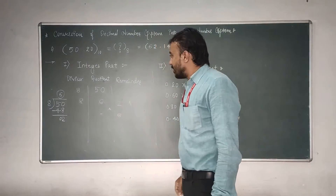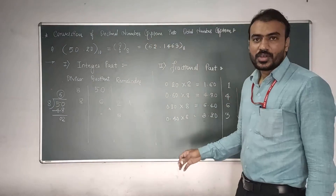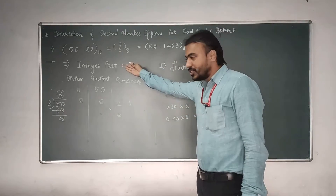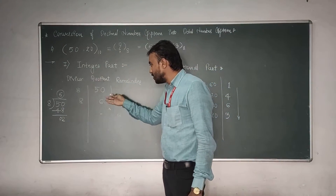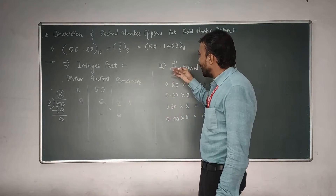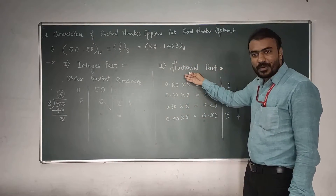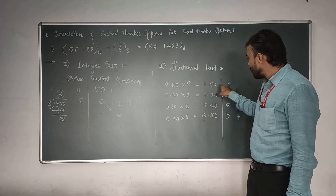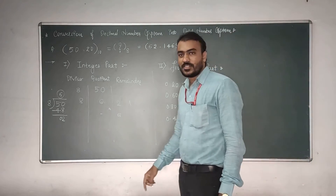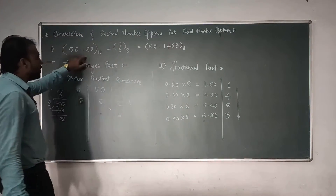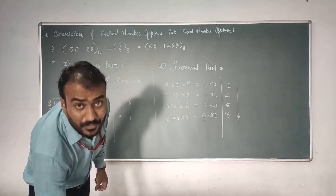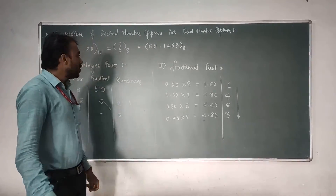The final answer is 50.20 in decimal equals 62.1463 in octal. Whenever you want to convert a decimal number into octal, divide the integer part by 8, keep noting down the quotients and remainders, and multiply the fractional part by 8, always noting down the integer side. This is how we can convert any given decimal number into octal.